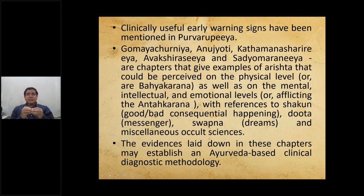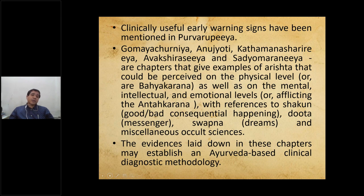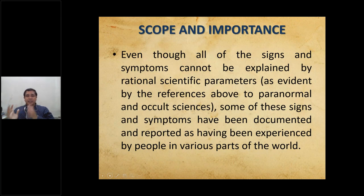This is at least a 5,000-year-old scripture. Chikitsa Sthana (17 chapters), Kalpa Sthana (12 chapters), and Siddhi Sthana (12 chapters) were re-edited and re-compiled in the fourth century by Dridabala. The Indriya Sthana was originally from the Agnivesha Tantra. These are all observational findings, observed many times and drafted as evidence in the form of the 12 chapters of Indriya Sthana.